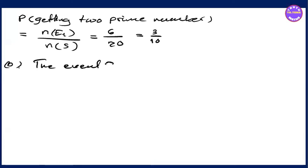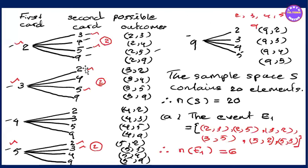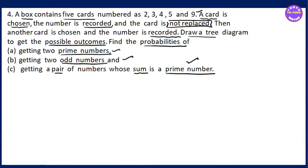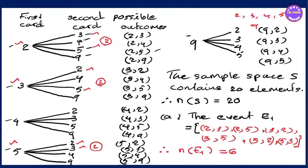The event is E2. We're going to identify odd numbers. The mark is 3, 5, 9.